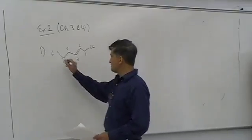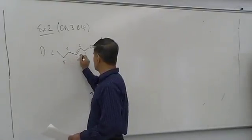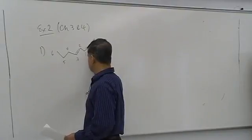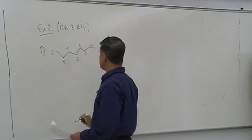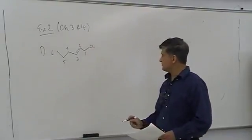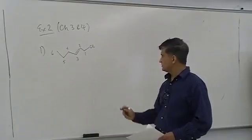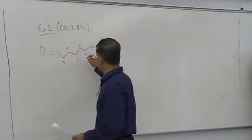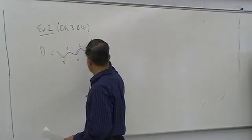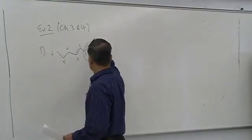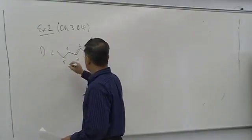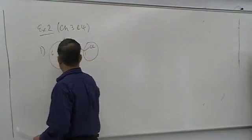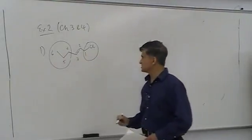Keep in mind these are all carbons, and there is a CL group. Before I try to name this compound, I need to first find out whether, if I have a double bond, these two groups could be on the same side or on opposite side. Let's highlight what is attached to the double bond.